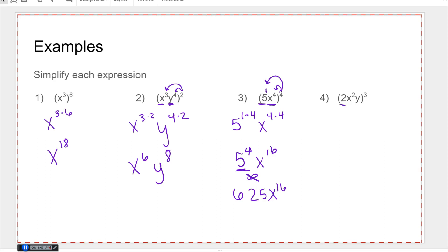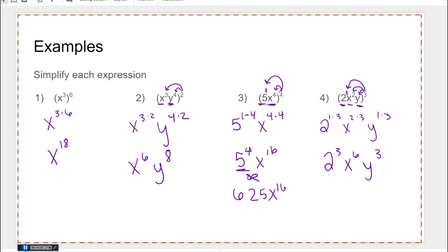Again we've got a two, an x, and a y, so don't forget to put an exponent of one on the two and on the y. So it's going to be two to the one times three, x to the two times three, y to the one times three — that's two to the third x to the sixth y to the third, or you can multiply that out and get eight x to the sixth y to the third.